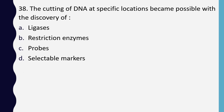Question 38. Cutting of DNA at specific locations became possible with the discovery of: ligases, restriction enzymes, probes, or selectable markers. The correct answer is option B: restriction enzymes.